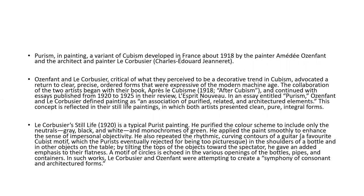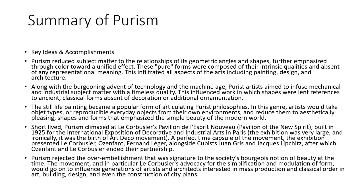This is important in the history of the Purism movement—with essays published from 1920 to 1925, on the new spirit. There is an essay entitled 'Purism' where they define painting as an association of purified, related, and architectural elements. This concept is reflected in their still life paintings with clean, pure, integral forms. Le Corbusier concentrated on neutrals—gray, black, and white—and the monochromes of green. That perhaps explains the minimum use of color; you could paint in green or red or brown, but they decided to paint it white. In architecture it was distilled even further. Purism reduced subject matter to the relationship of its geometric angles and shapes, further emphasized through color for a unified effect. These pure forms were composed of intrinsic qualities and absent of any representational meaning, infiltrating all aspects of the arts including painting, design, and architecture.